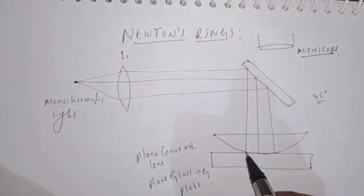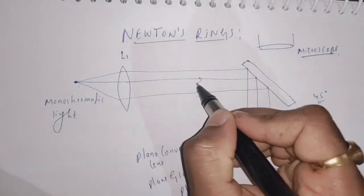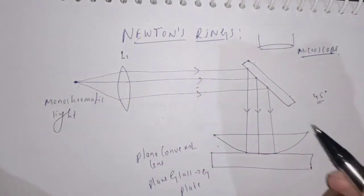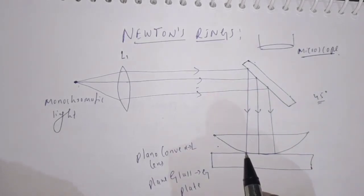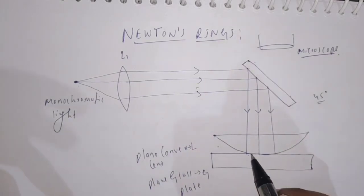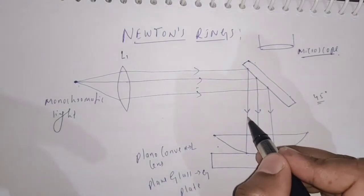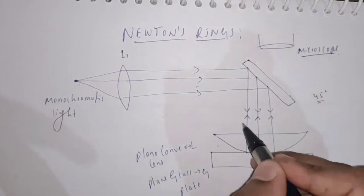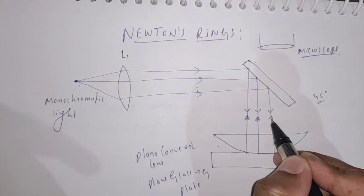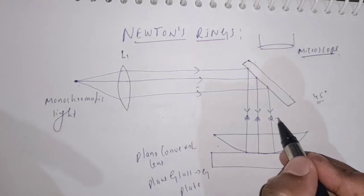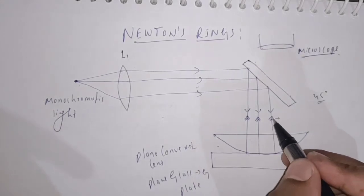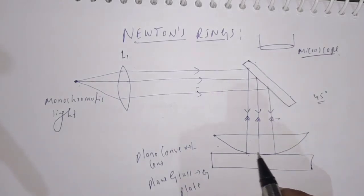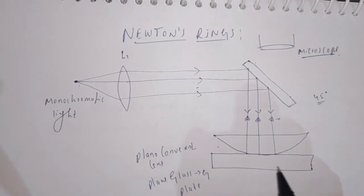After reflection, they are incident here — this is the direction of light. And again, when they are incident on this plano-convex lens and glass plate, some of the light waves get reflected and some get transmitted. I am going to represent the reflected light waves by these two arrow marks. This symbol represents the reflected wave when the light wave is incident on the plane of the plano-convex lens and glass plate.